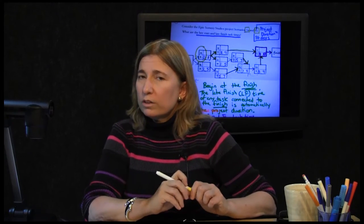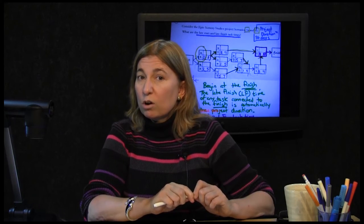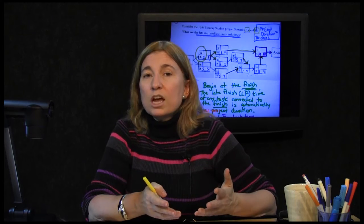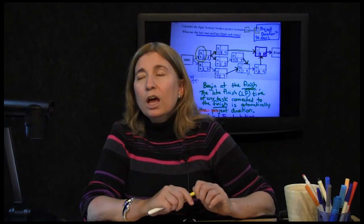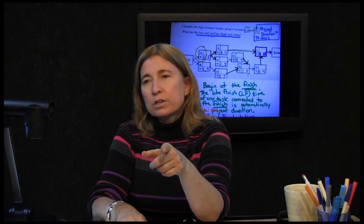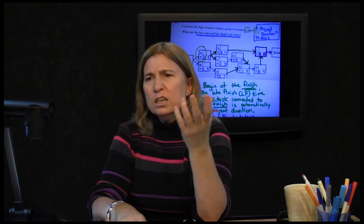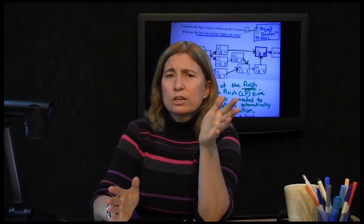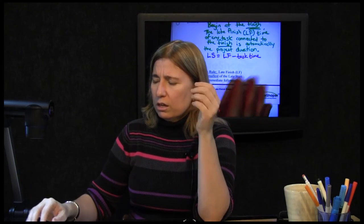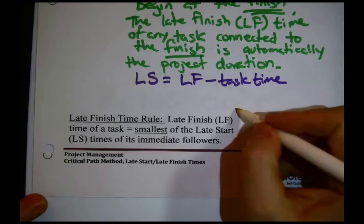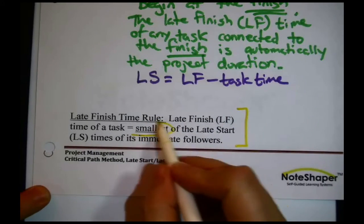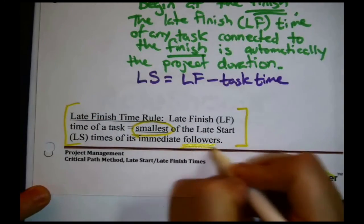If you work through a problem and by the time you find all the late start and late finish times there isn't anyone with a late start time of zero near the start node, you made an arithmetic mistake somewhere — go find it. At least one task will zero out at the starting node. A was the only one that required stopping to think, because E had to start at the latest in 8 days and C at the latest in 1 day. This is formally known as the late finish time rule: the late finish time of a task is the smallest of the late start times of all the tasks that follow it.